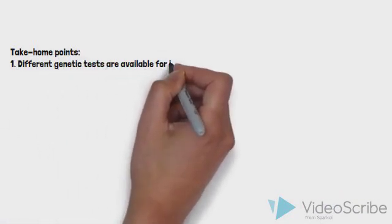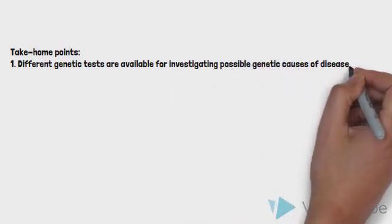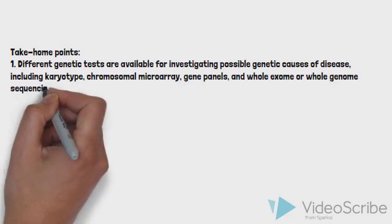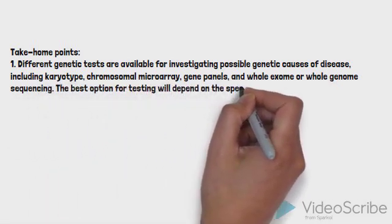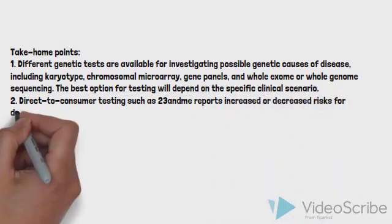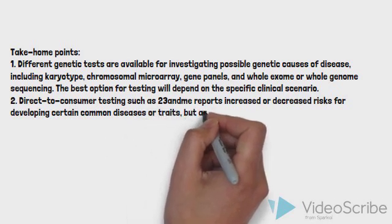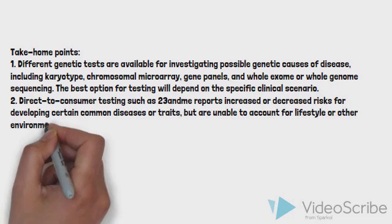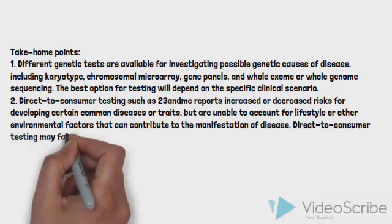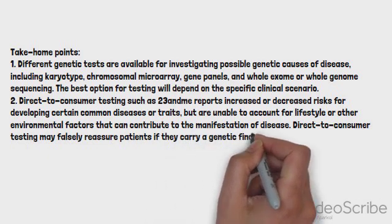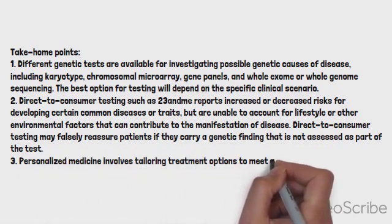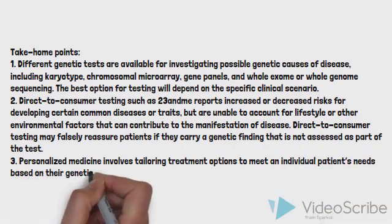That brings us to the end of the case for today. Let's review some take-home points from this final episode in our three-part series on genetic diseases. One: different genetic tests are available for investigating possible genetic causes of disease, including karyotype, chromosomal microarray, gene panels, and whole exome or whole genome sequencing. The best option for testing will depend on the specific clinical scenario. Two: direct-to-consumer testing, such as 23andMe, reports increased or decreased risks for developing certain common diseases or traits, but is unable to account for lifestyle or other environmental factors that can contribute to the manifestation of disease. Direct-to-consumer testing may falsely reassure patients if they carry a genetic finding that is not assessed as part of the test. Three: personalized medicine involves tailoring treatment options to meet an individual patient's needs based on their genetic composition or other factors.